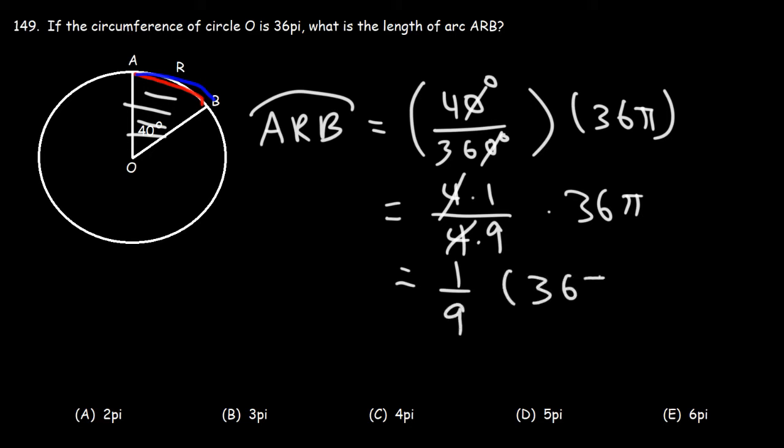It's one-ninth of 36 pi. 36 divided by 9 is 4. So the answer is 4 pi. Therefore, C is the correct answer.